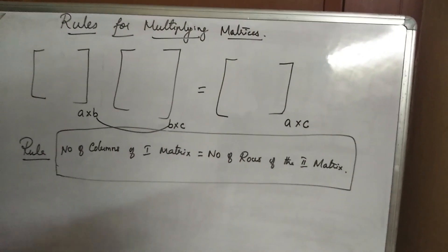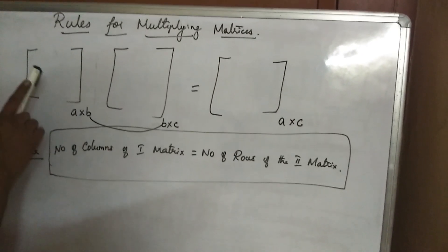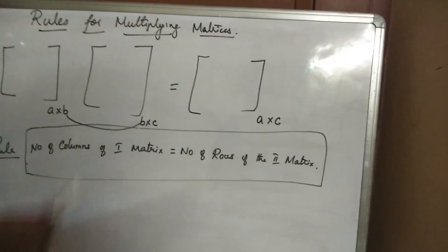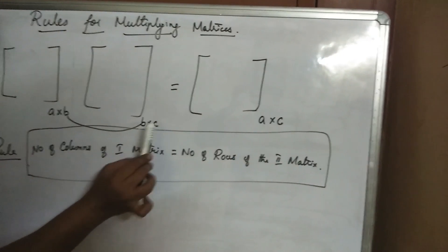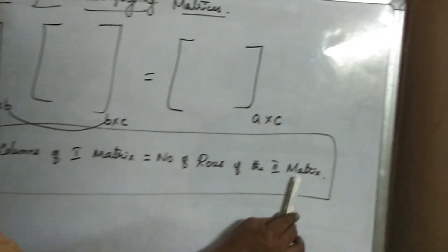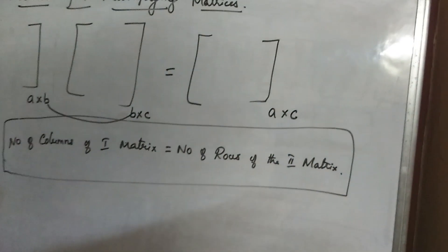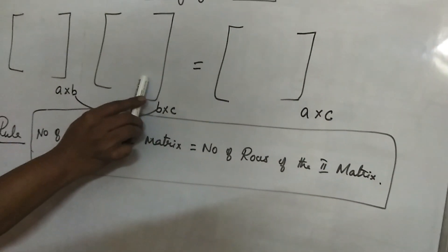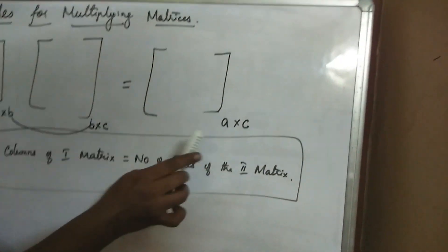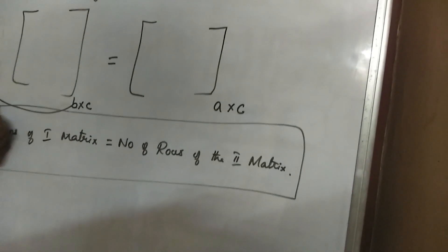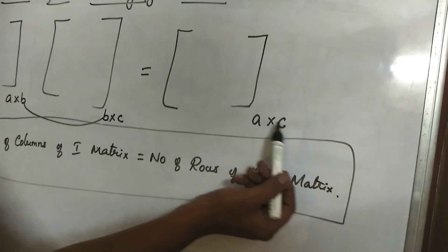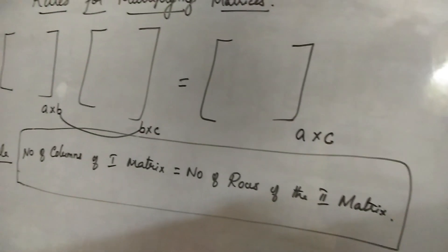So, to summarize: first matrix order is A by B, second matrix order is B by C. Number of columns of the first matrix equals number of rows of the second matrix — then we can multiply the two matrices. After multiplying, the two common values cancel and you get the answer order A by C. Clear? Understood?